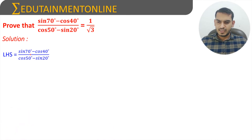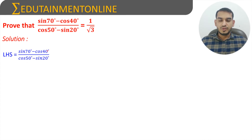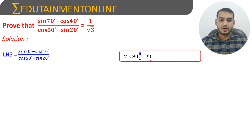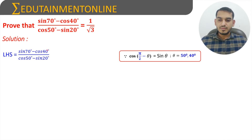The numerator is in the form of sin 70 degrees minus cos 40 degrees and the denominator also contains one cos and one sin. So we will convert these two cos terms in terms of sin. We know that cos(90 minus theta) is sin theta, so cos pi by 2 minus theta equals sin theta. We will write cos 40 degrees as sin 50 degrees and cos 50 degrees as sin 40 degrees.